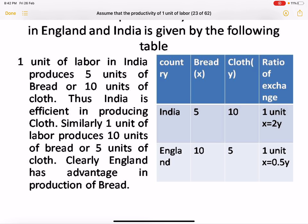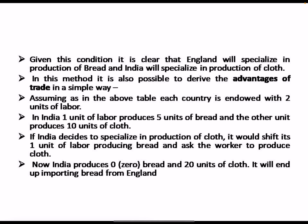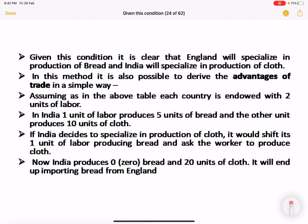Looking at absolute terms — how much bread or cloth is produced per unit of labor — it is clear that England should specialize in production of bread and India should specialize in production of cloth. Assume the country is endowed with two units of labor; one unit of labor produces 5 units of bread and the other unit produces 5 units of cloth.